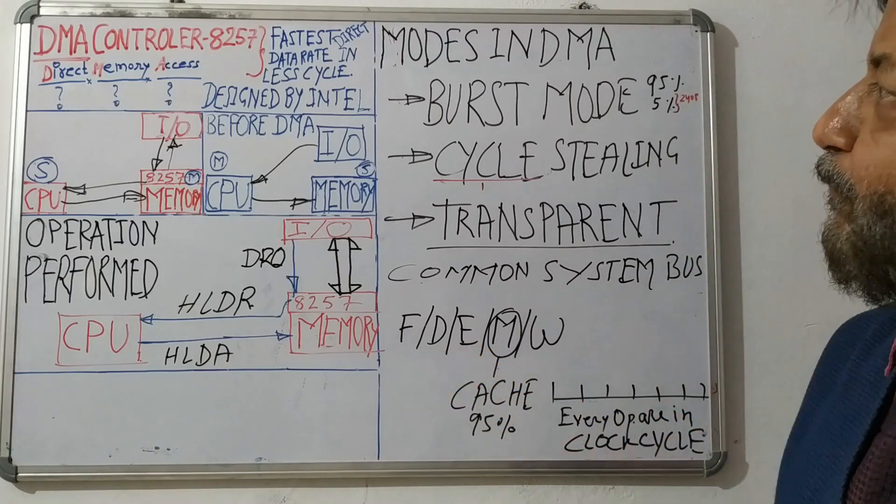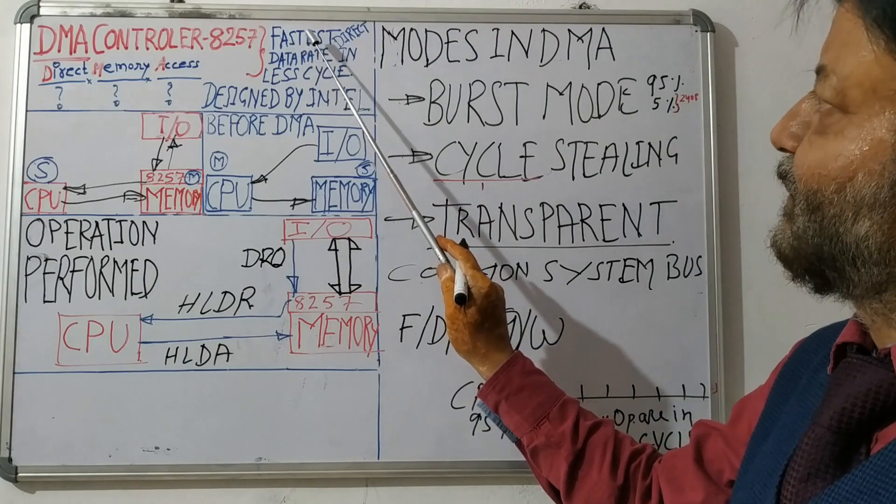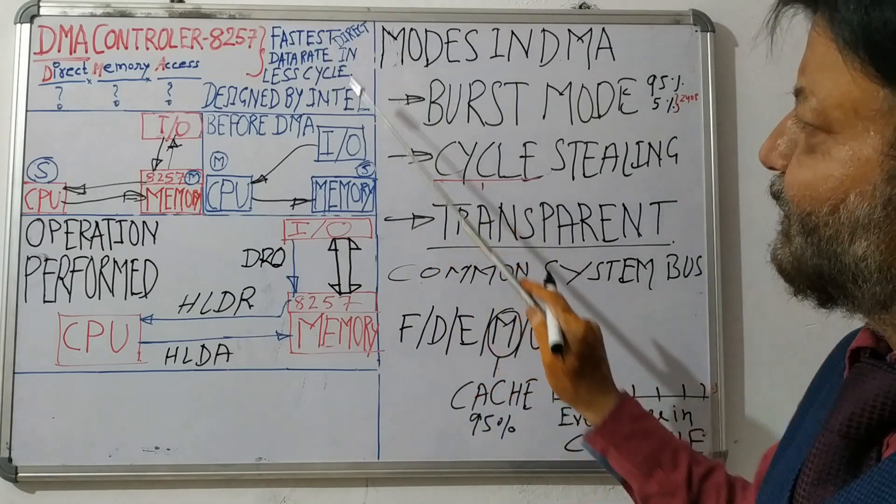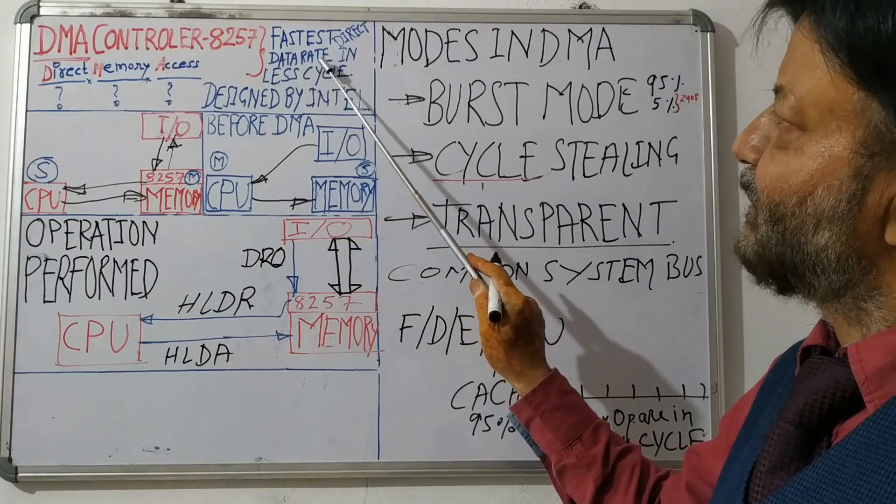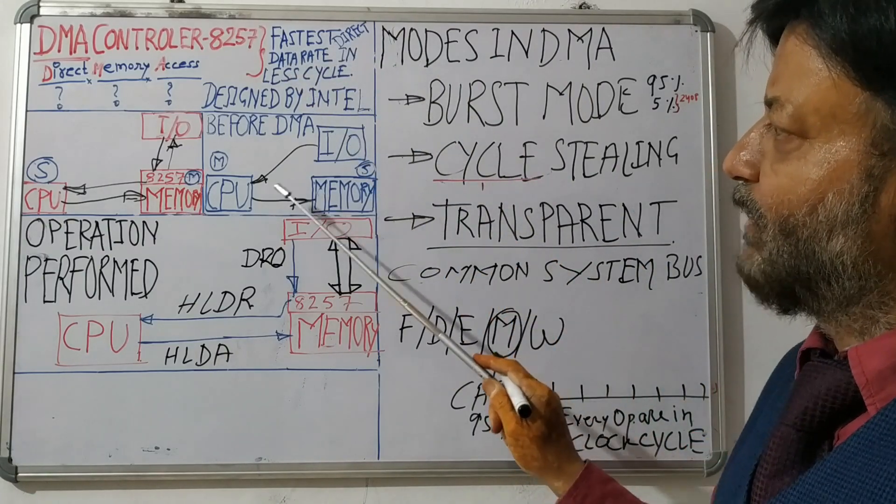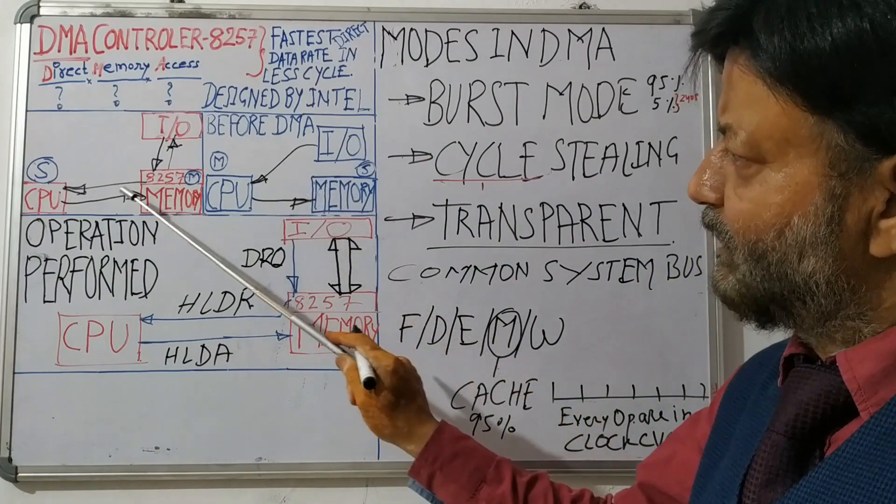This way, data can be transferred fastest, directly. Directly means IO to memory or memory to IO. Our fastest data is less cycle. Here we need more cycle, here we need less cycle.